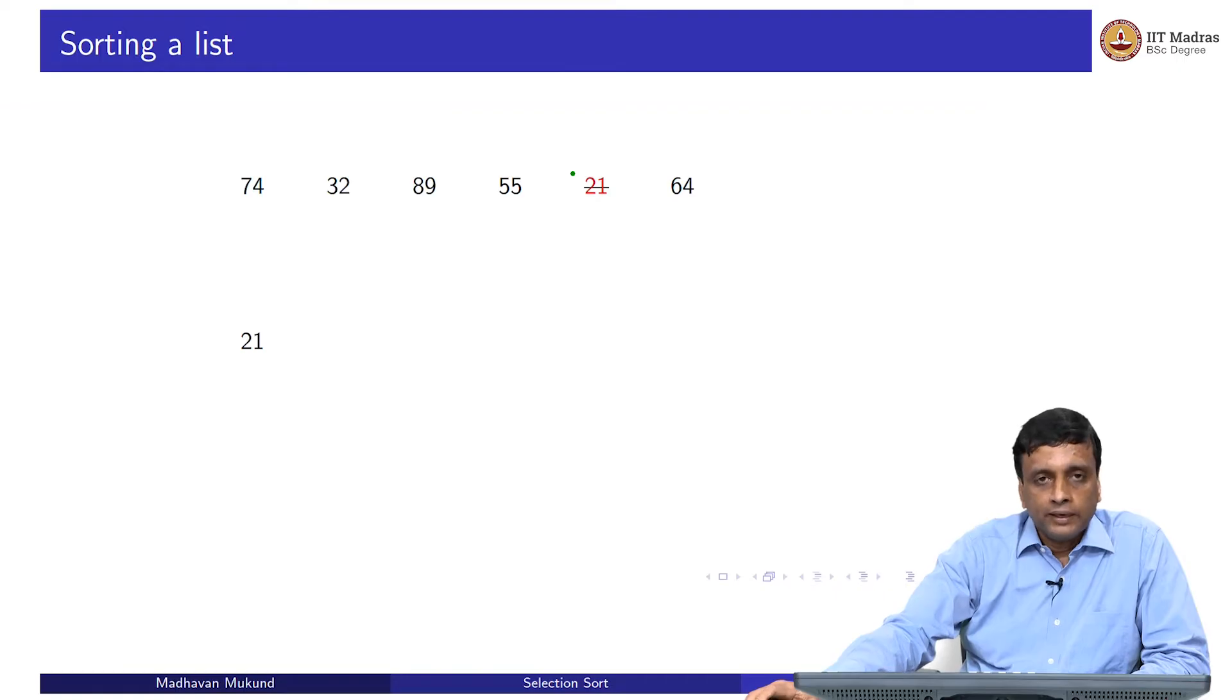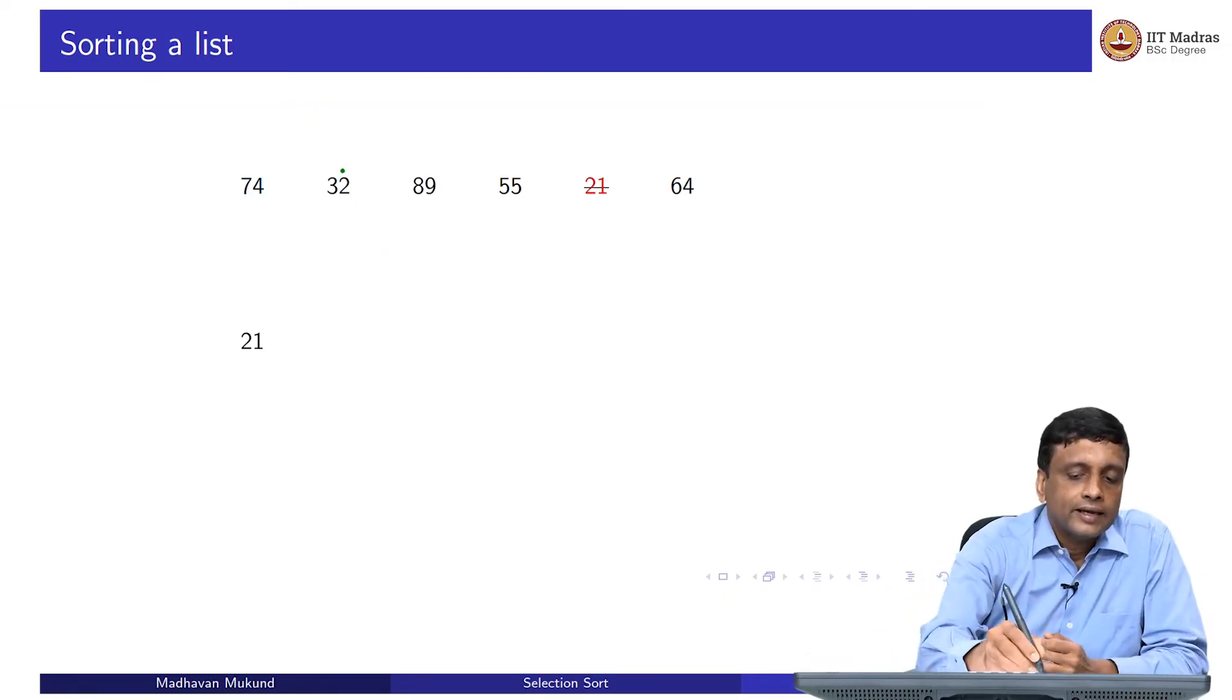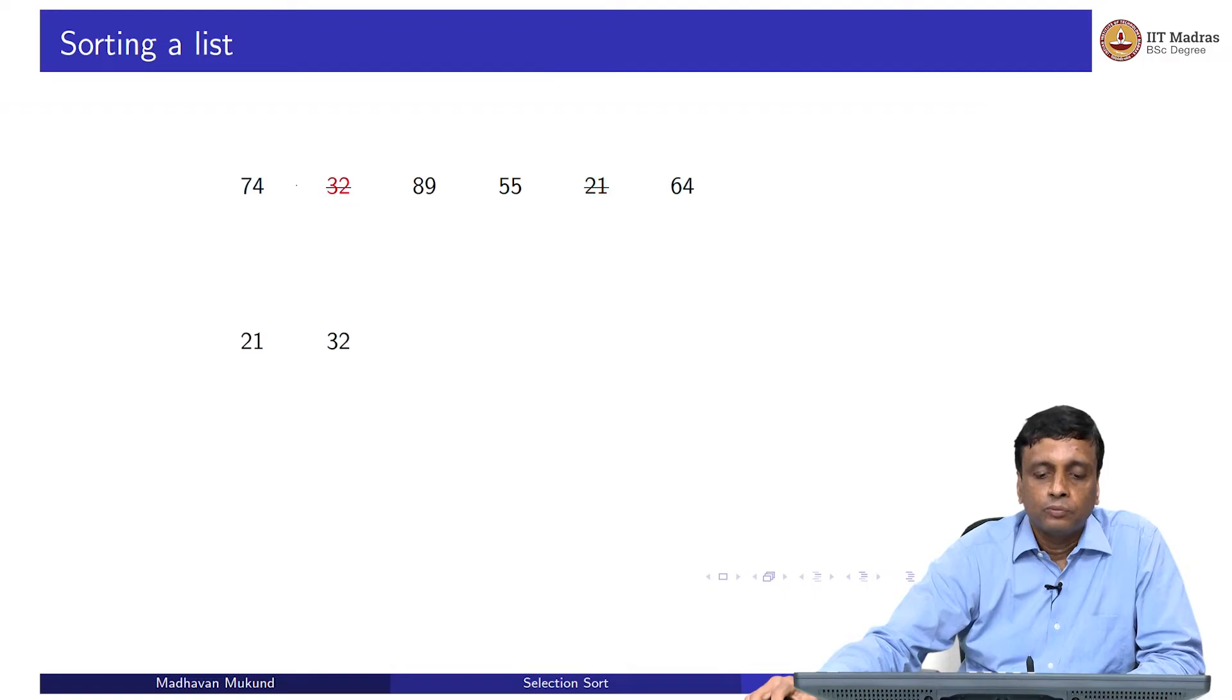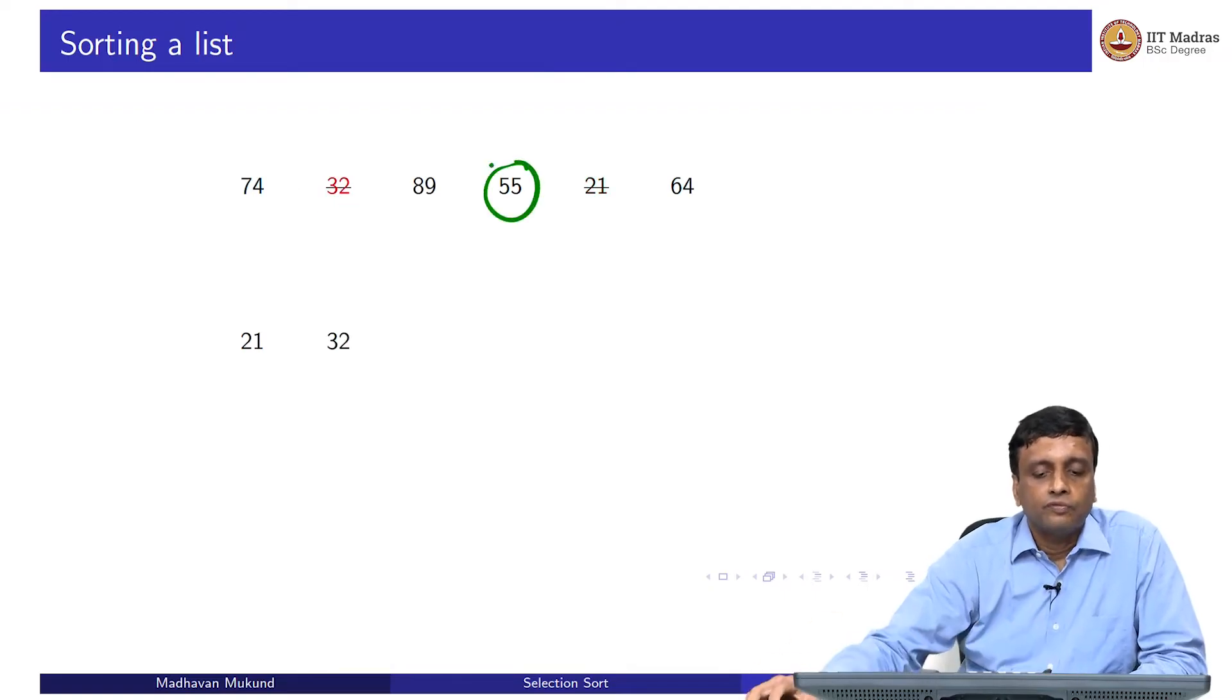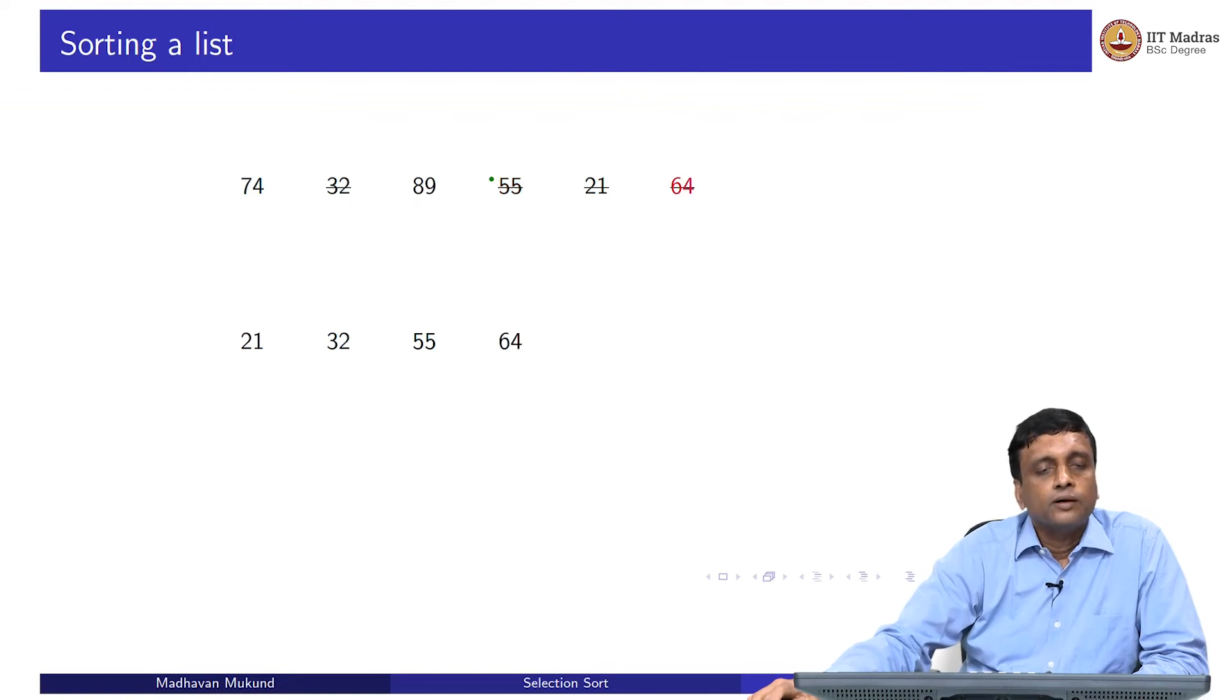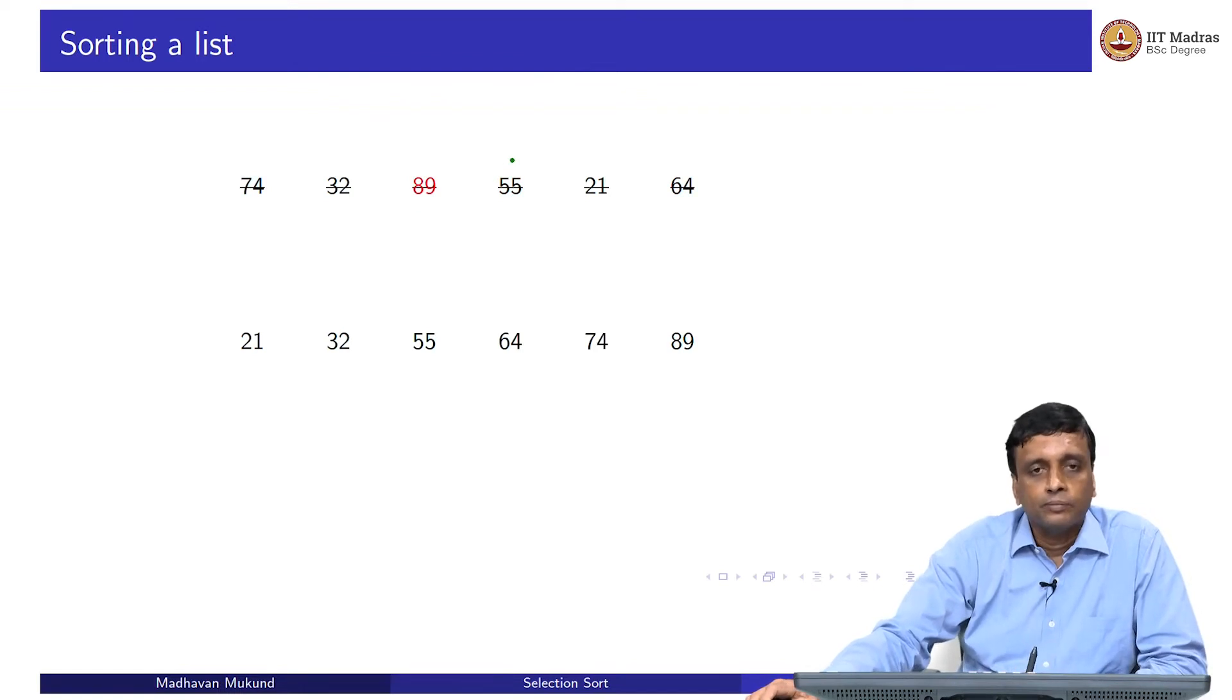Now I have five papers remaining. Again, I look through the whole thing and I find the second minimum, the minimum among what remains and that is this 32. 32 is my next candidate. I will take this 32 and move it aside. Then I will find this 55 and move it aside and so on. 55, then 64, then 74 and then 89. This is the algorithm in work.